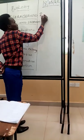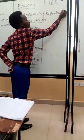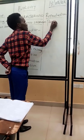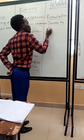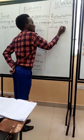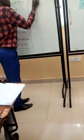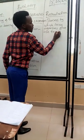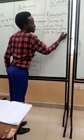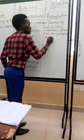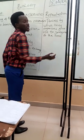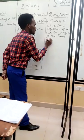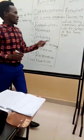So reproduction — we can define it as the process by which living organisms give rise to young ones of the same kind. Note that it is of the same kind, not just young ones.